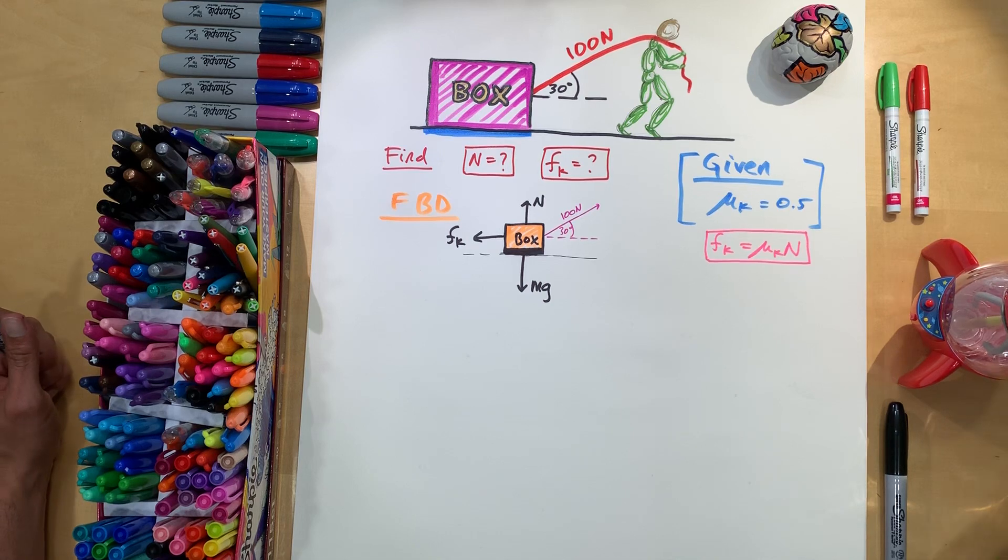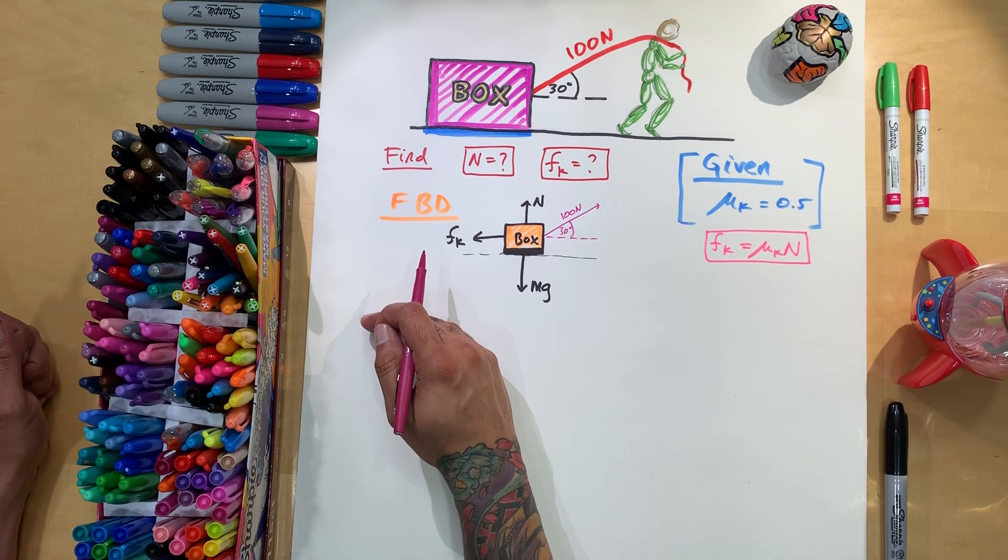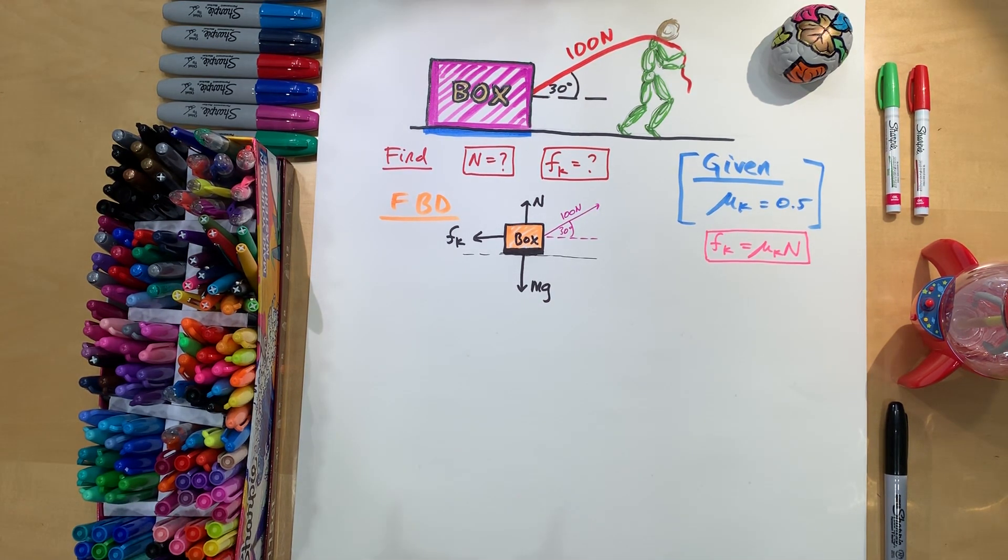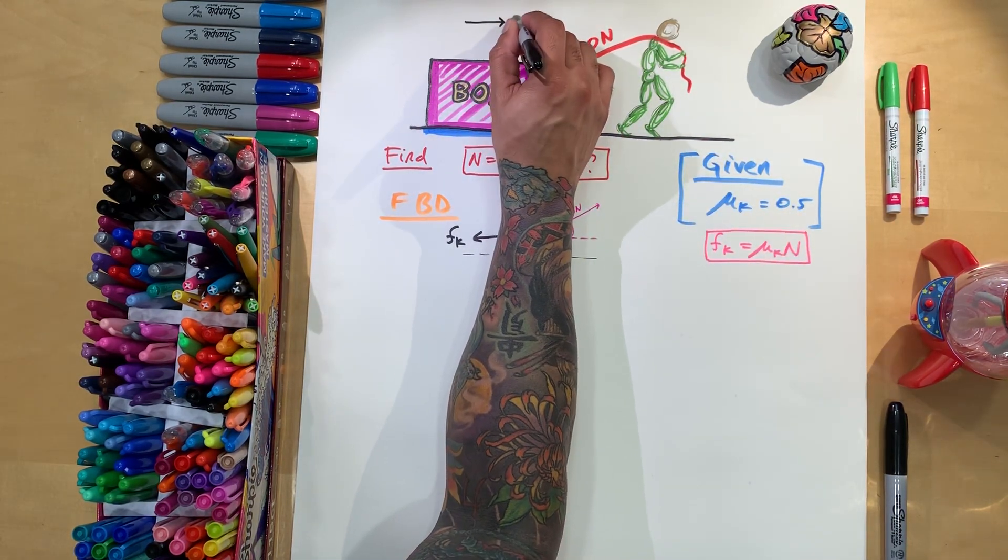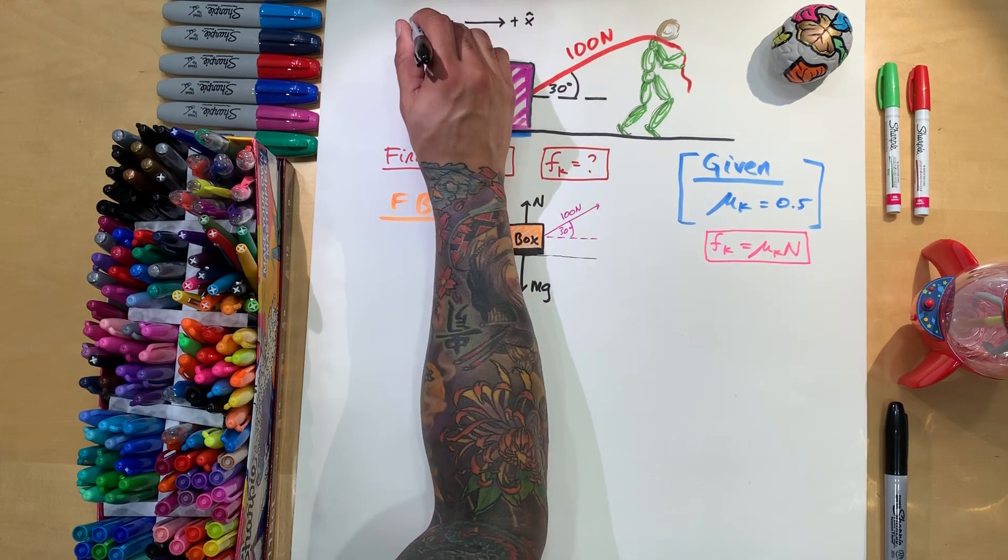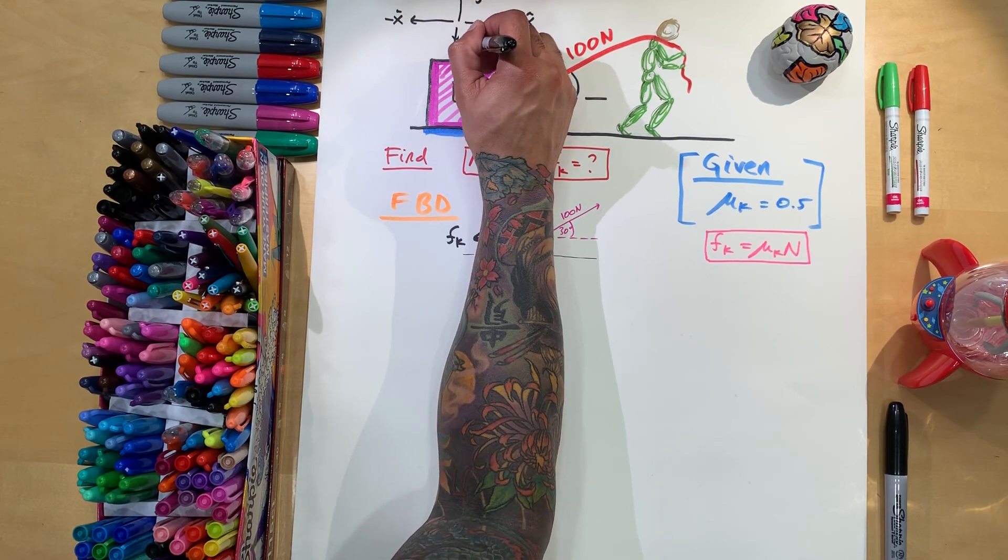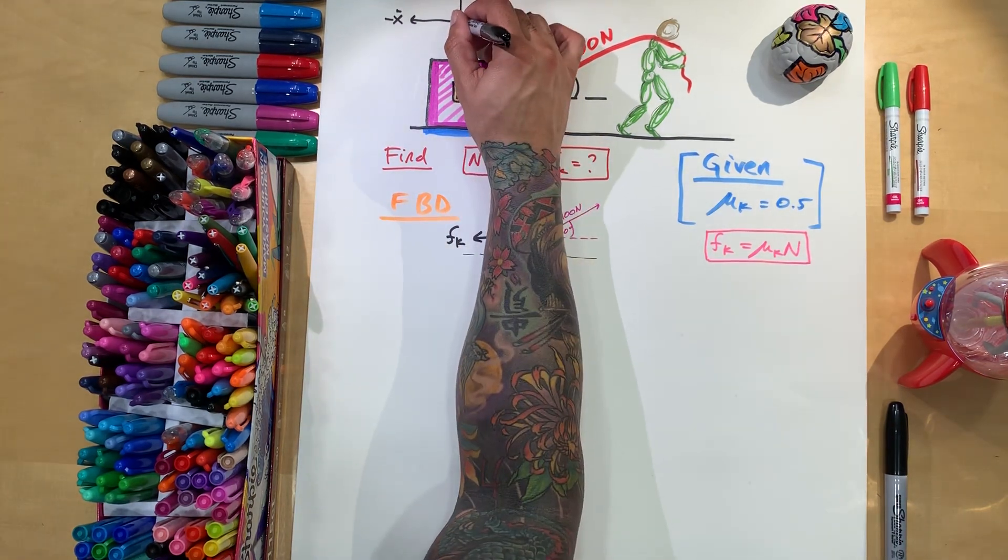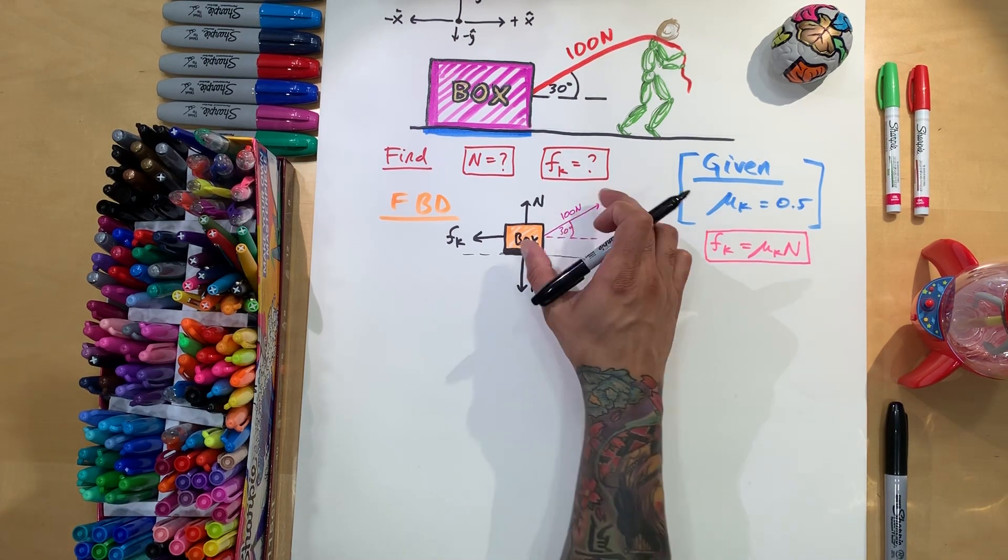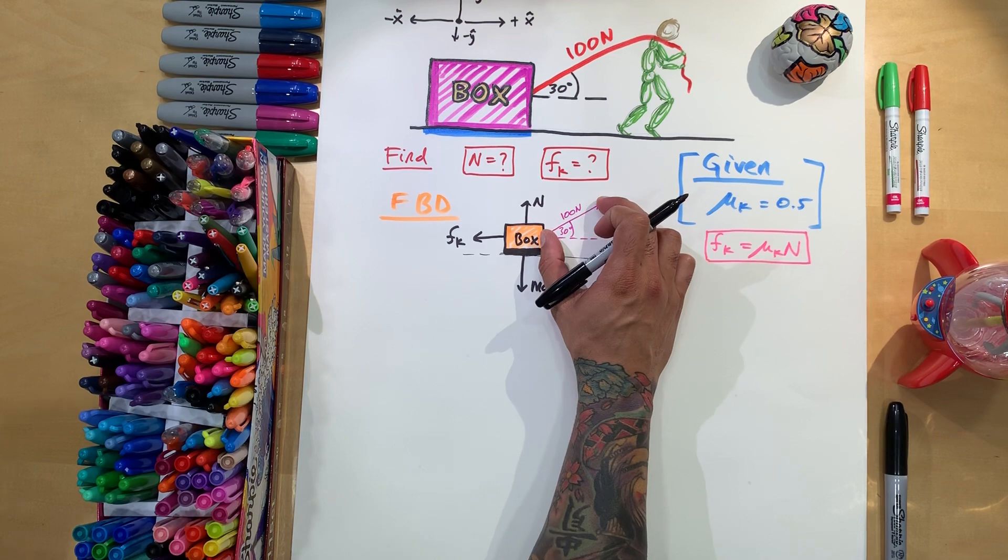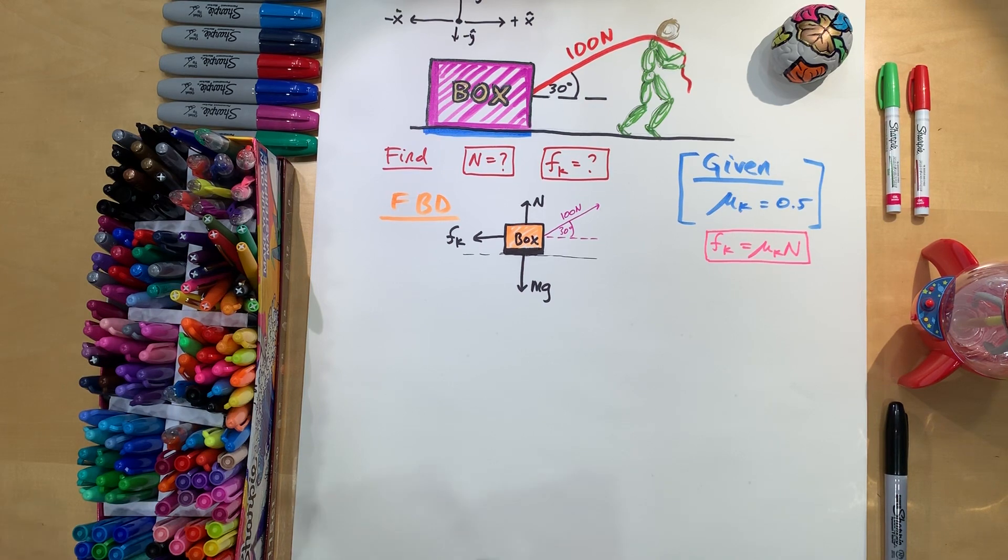We can't do anything with the value that is diagonal. Because when we do our sum of forces, we're going to do sum of x and sum of y. So if we look at this system, this is going to be positive x, this is going to be negative x. Up is going to be positive y, and then down is going to be negative y. So now, we need to break up this diagonal component, which is a tension, into two components that are not diagonal that we can work with.